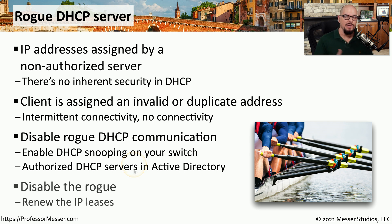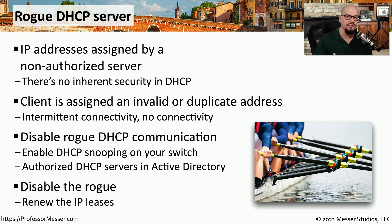Once you identify where a rogue DHCP server might be, you need to disable that device and have all devices on the network release their current IP address and get reassigned addresses from the legitimate DHCP server.